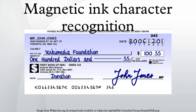Magnetic Ink Character Recognition (MICR) is a character recognition technology used mainly by the banking industry to ease the processing and clearance of checks and other documents. The MICR encoding, called the MICR line, is at the bottom of checks and other vouchers and typically includes the document type indicator, bank code, bank account number, check number, check amount, and a control indicator. The technology allows MICR readers to scan and read the information directly into a data collection device. Unlike barcodes and similar technologies, MICR characters can be read easily by humans.